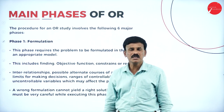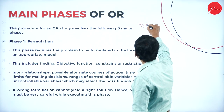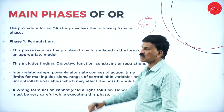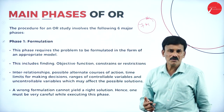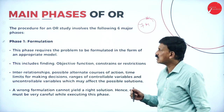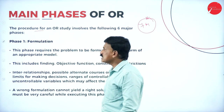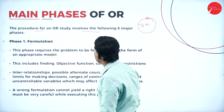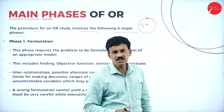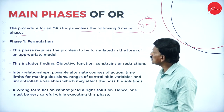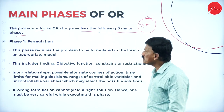The next concept is the main phases of OR. In the examination they may ask this for 7 or 8 marks. What are the main phases of operation research? This is a very important question for the examination, as theory questions are usually from this first unit. The procedure for an operation research study involves the following 6 major phases.